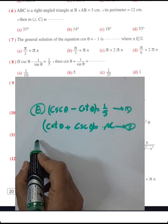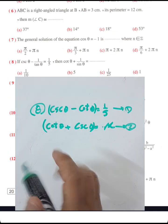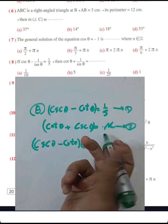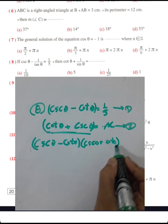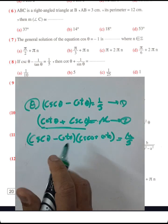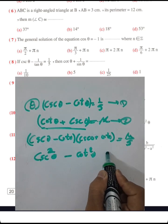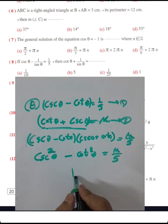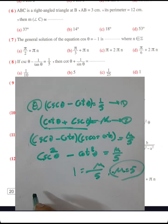Question number eight: given cosec theta minus cot theta times cosec theta plus cot theta equals m over 5, find m. Using the difference of squares, this equals cosec squared theta minus cot squared theta equals m over 5. We know the identity cosec squared theta minus cot squared theta equals 1, so 1 equals m over 5, therefore m equals 5. The answer is letter B.